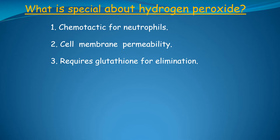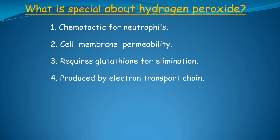Thus, both nuclear and mitochondrial genomes contribute to the natural history of ulcerative colitis. We can use this information to therapeutically alter the natural history of this disease. Number four, produced by the electron transport chain. The electron transport chain produces most of the hydrogen peroxide in the body, and any condition that increases the activity of the electron transport chain will increase hydrogen peroxide production and the risk of developing ulcerative colitis.